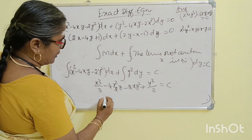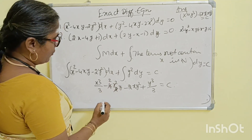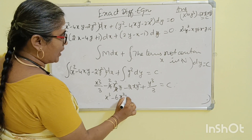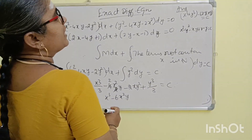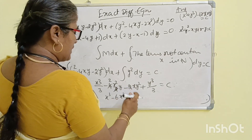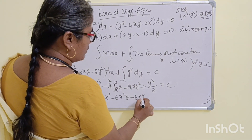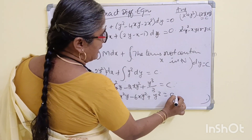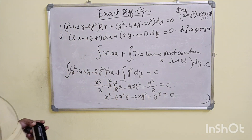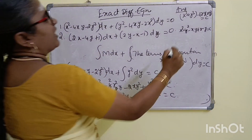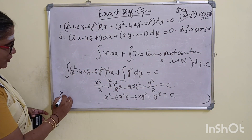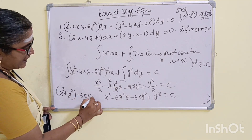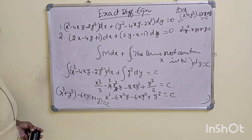Now simplify: 2y squared by 2, gives x cubed minus 6x squared y, minus 6xy squared plus y cubed equal to 6C. Answer: x cubed plus y cubed minus 6xy times (x plus y) equal to C. This is the exact differential equation easy solve method.